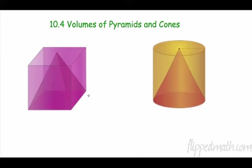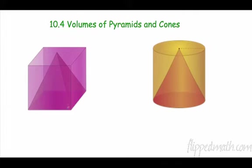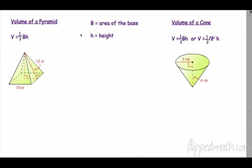Welcome back. Now we're going to find the volumes of pyramids and cones. A pyramid has a special relationship to a prism — you can see similarities between them, and a cone likewise has similarities. We should try sometime: make a pyramid that has the same base and the same height as the prism and see how many pyramids you can actually fit in there.